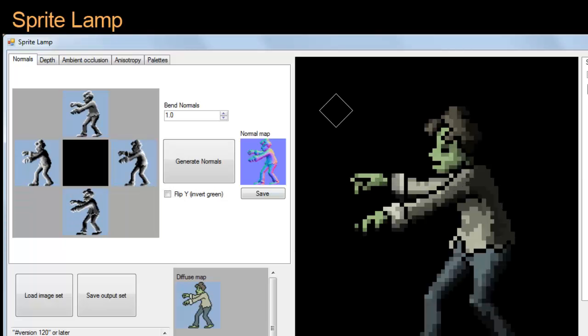I'm really excited this week because we're doing something a little different. This is Sprite Lamp, which was written by an Australian bloke named Finn Morgan, and it's a utility that can help artists make 2D games look 3D.